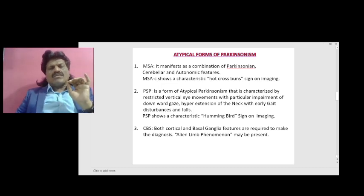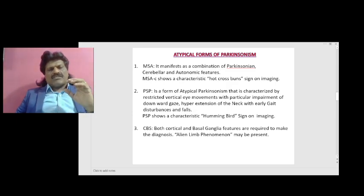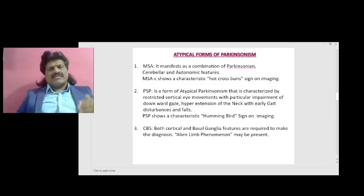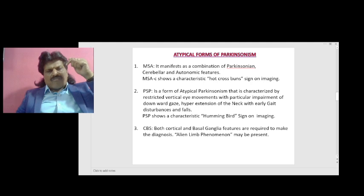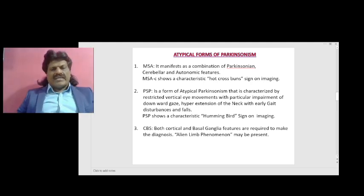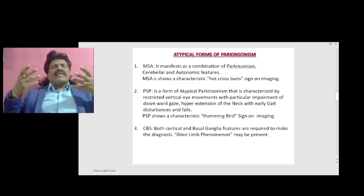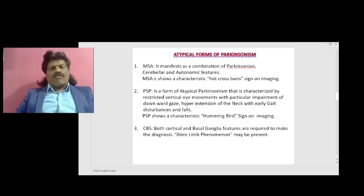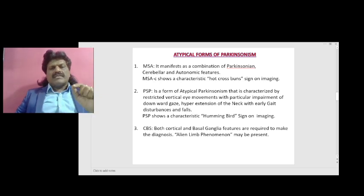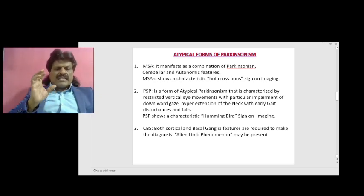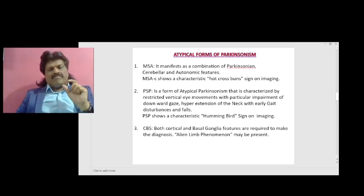Multiple system atrophy manifests as a combination of parkinsonism, cerebellar, and autonomic features. The MSA cerebellar type shows a characteristic hot cross bun sign on imaging. Progressive supranuclear palsy is characterized by restricted vertical movements with particular impairment of downward gaze, hyperextension of the neck with early gait disturbances, and falls — because due to neck hyperextension they cannot see the floor. PSP shows a characteristic hummingbird sign on imaging. Corticobasal syndrome requires both cortical and basal ganglia features; the alien limb phenomenon may be present, which is the unwanted movement of one hand beyond one's control.